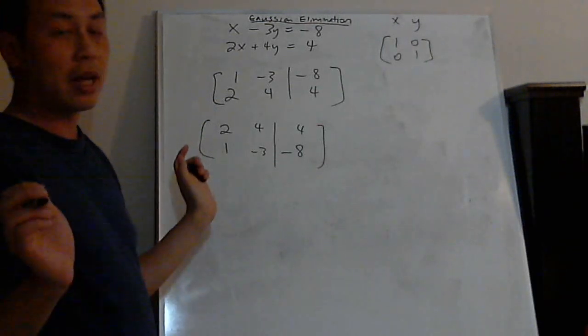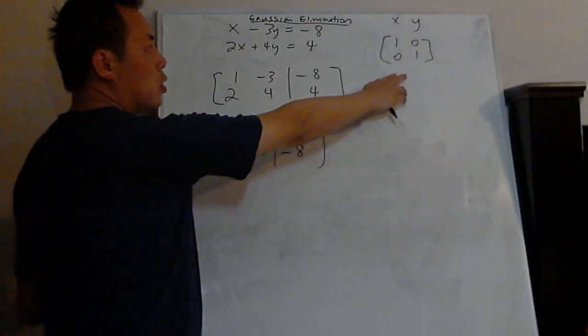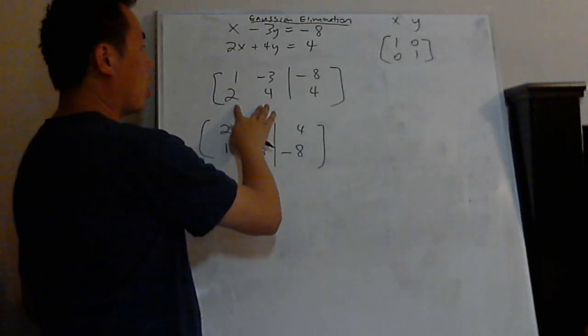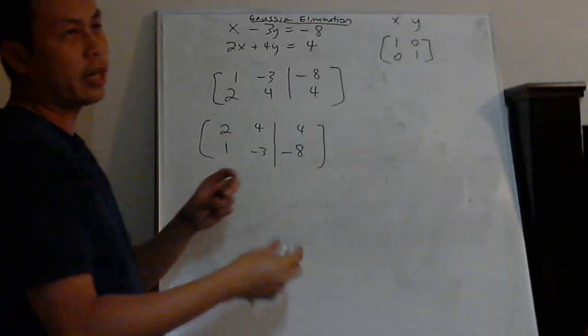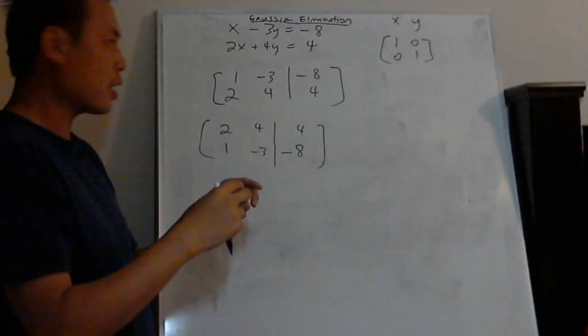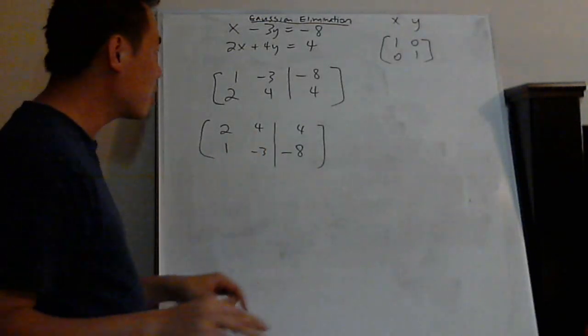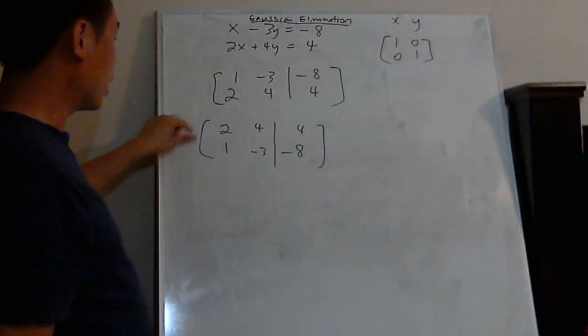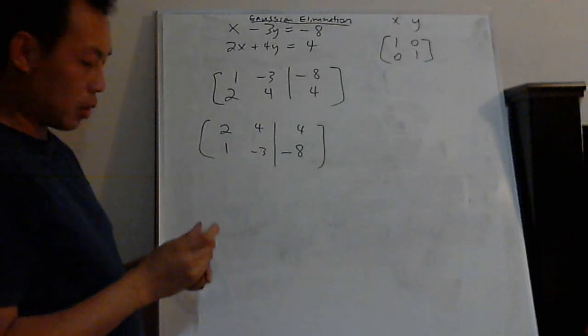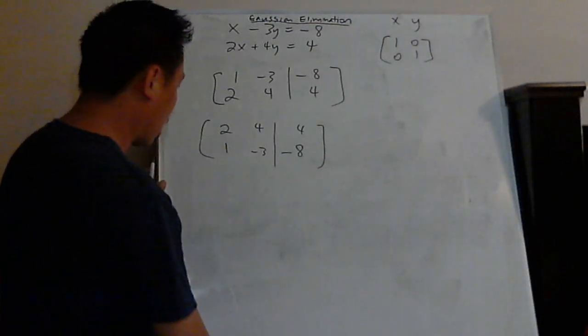You can swap rows, and you can do that in row reduction. Because the goal is you want to make it into this format here, 1, 0, 0, 1. So it's kind of like a Rubik's Cube, and you're trying to play around with the colors and everything until all the colors match. And right now, you're trying to make it into 1, 0, 0, 1. So you can swap them around, that's one of the things you can do. You can swap the rows, just the rows you can swap.